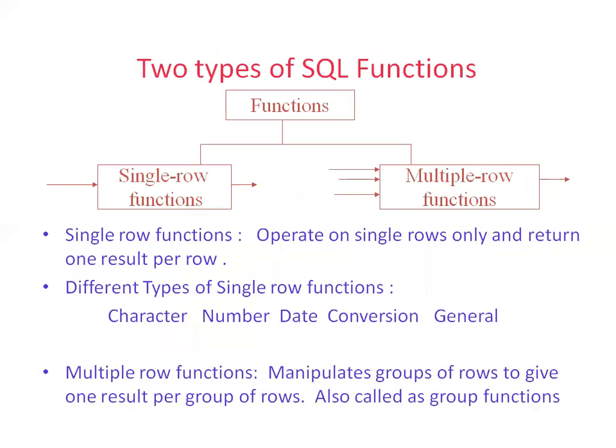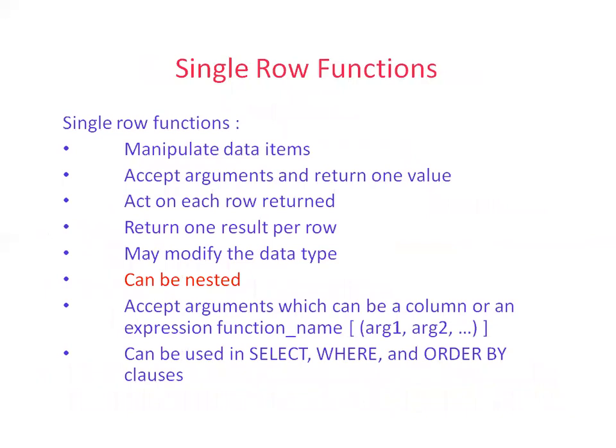There are two kinds of functions in SQL: single row functions and multi-row functions. A single row function operates on a particular column of a particular row at a given point in time. A multi-row function operates on multiple records — examples include SUM, COUNT, and AVG. LENGTH, on the other hand, is a single row function. Multi-row functions are also called group functions.